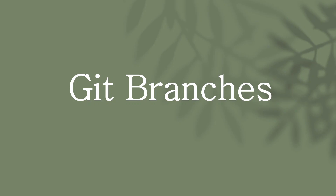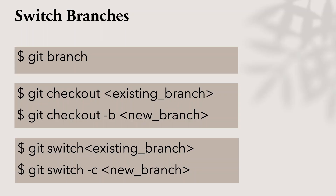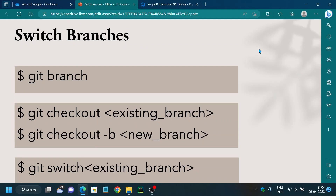So let's see what git branches are and how you work with them. A git branch is a particular area where a developer works. To explain it in layman's terms, a branch is a place where you can own that space for development and then combine it with other branches.